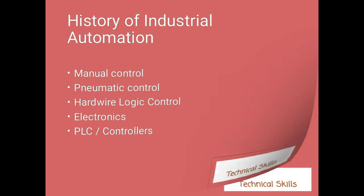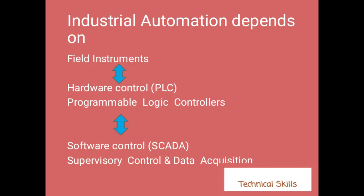Industrial automation depends on three things. The first is field instruments. Field instruments are the instruments used in industry — it can be a motor, a relay, a contactor, a pressure transmitter, a level sensor — anything we are using in the field. The hardware logic control stage was essentially field instruments control, meaning automation was achieved by using field instruments directly.